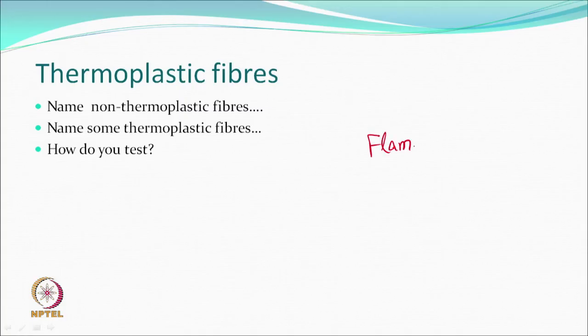To test whether a fibre is thermoplastic, there is a flame test: take a bundle of fibre near the flame — not in the flame — and it shrinks. This is a test for thermoplastic behaviour. Acrylic fibres also shrink in this test. They are thermoplastic — they cannot be easily melted, but creases can be put and settings done at appropriate temperatures.